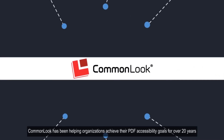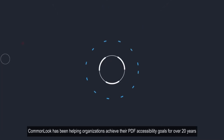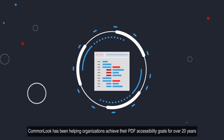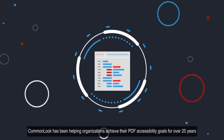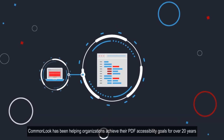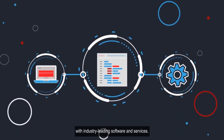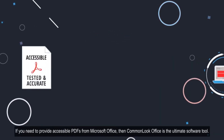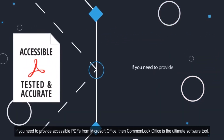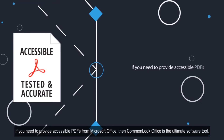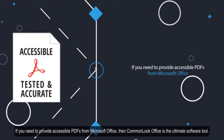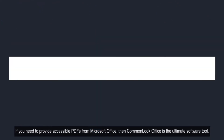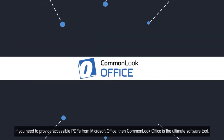CommonLook has been helping organizations achieve their PDF accessibility goals for over 20 years with industry-leading software and services. If you need to provide accessible PDFs from Microsoft Office, then CommonLook Office is the ultimate software tool.